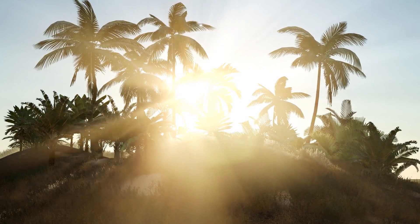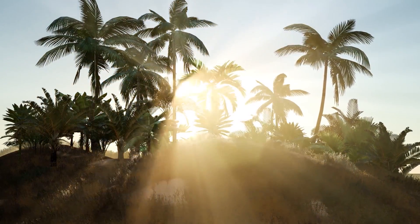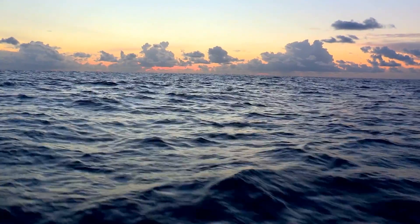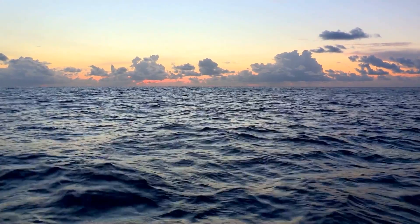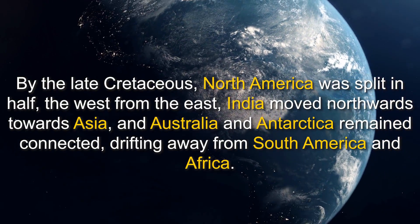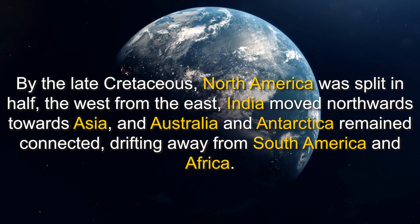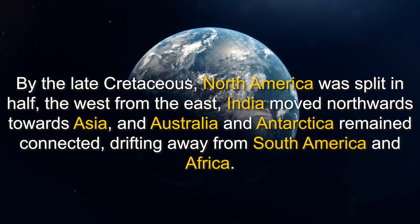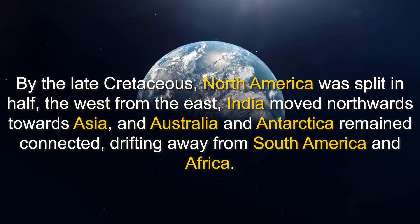The Cretaceous period went through a huge amount of geological and climatic change. The landmasses were breaking apart and moving, oceans were forming, and this was having a massive impact on life on Earth. By the late Cretaceous, North America was split in half — the west from the east. India moved northwards towards Asia, and Australia and Antarctica remained connected, drifting away from South America and Africa.